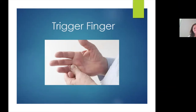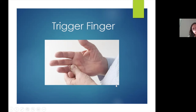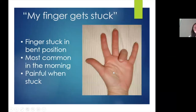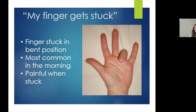Another very common condition I see that causes a lot of hand pain is trigger finger. The pain is typically right at the base of the finger, and it often hurts when you grip, close your fist, and try to grab things. When this condition worsens, you can also get catching or clicking of the finger, and sometimes it gets completely stuck in a bent position — classically in the morning when you first wake up. It can be very painful, or sometimes just an annoyance, depending on the presentation.